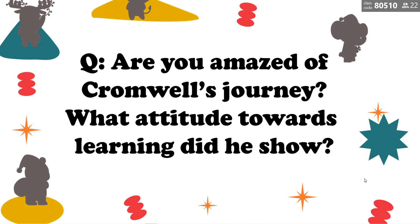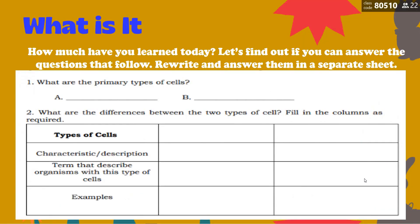Okay, now the questions about the story: Are you amazed at Cromwell's journey? What attitude towards learning did he show? How much have you learned today? Let's find out if you can answer the questions that follow. Write your answers on a separate sheet. What are the primary types of cells? What are the differences between the two types of cells? Fill in the columns as required.